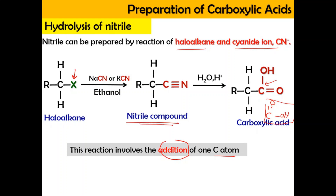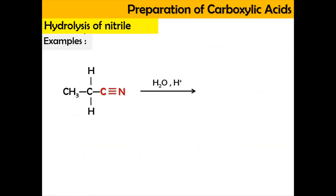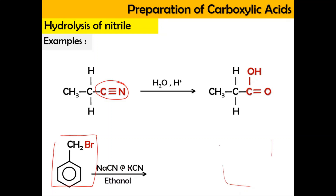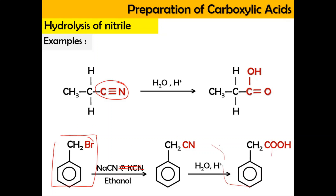There may be a reaction scheme asking you to produce a carboxylic acid from a haloalkane, and when you see there is an addition of a carbon chain, you know that a nitrile compound or Grignard reagent will be involved. For example, if you have a nitrile compound and hydrolyze it, you produce a carboxylic acid on that side. If you start with a haloalkane and want to add a carbon, react it with NaCN or KCN in ethanol; the CH2Br becomes CH2CN, which can then undergo hydrolysis to form the carboxylic acid. There is a clear addition of carbon chain — ada pertambahan carbon.